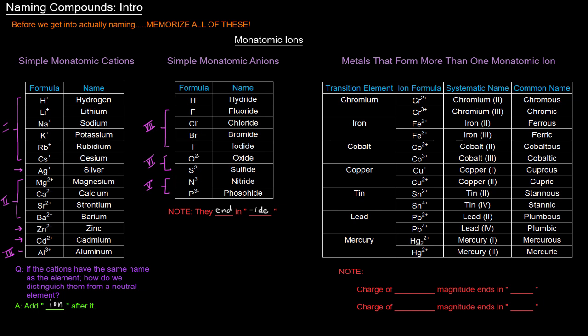So let's do it with chromium. Chromium, we can have Cr2+, in which case that would be called chromium 2, where the 2 is Roman numerals in parentheses. We have Cr3+, that's another ion that chromium can form. And that'll be chromium, parentheses, Roman numeral 3. So chromium 3. Now, these are the systematic names in this column here. These are the systematic names.